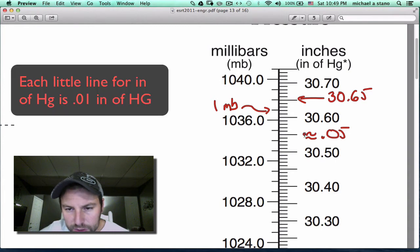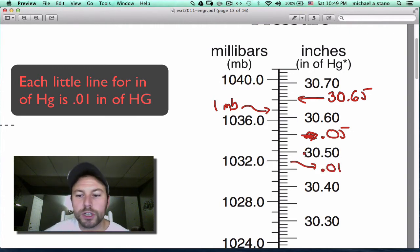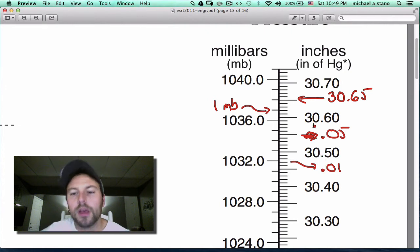So each one of these smaller ones is going to be worth 0.01. So now we know how the right and the left side is broken up, our inches of mercury and millibars. Now we can attempt to convert between each of those two variables.